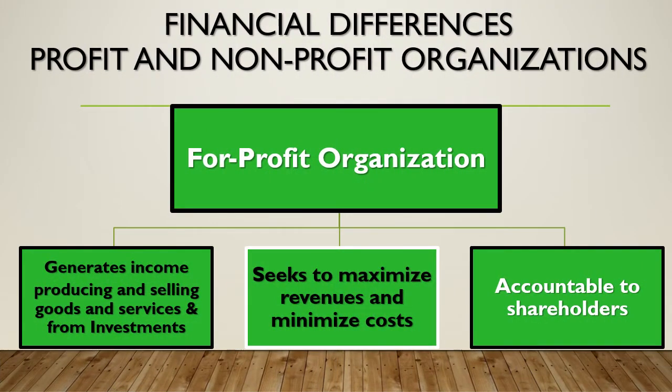Let's look at the financial differences between profit and not-for-profit organizations. In for-profit organizations or commercial enterprises, we generate income through producing and selling goods and services and from investments. We're going to seek to maximize revenues and minimize costs. And finally, we're going to be accountable to shareholders or people that will benefit from us increasing our revenue and minimizing costs.